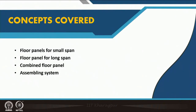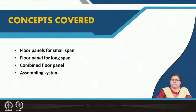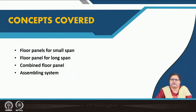Coming to the floor panel system, which is today's discussion, we have a system for small spans and another set of systems for long spans. The long span will also include the combined floor panel where beam and slab come together as a composite. We also need to know the assembling system — wall panels are set with sealants, so here too we need to know what should be the assembling system when setting these panels one after the other.